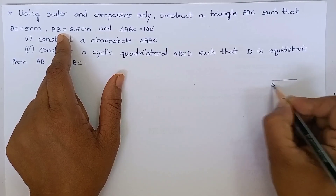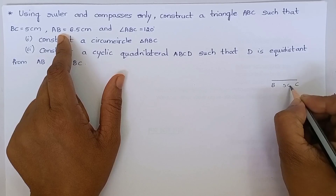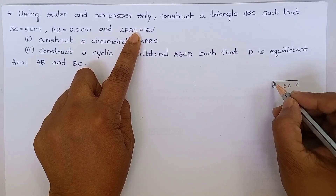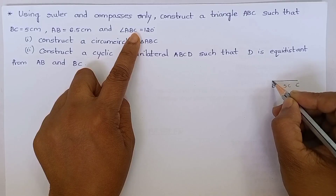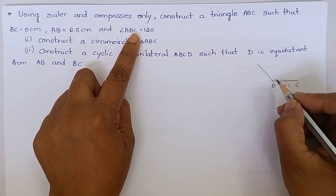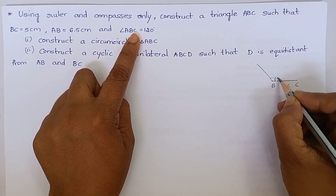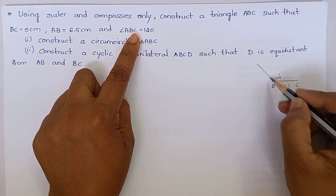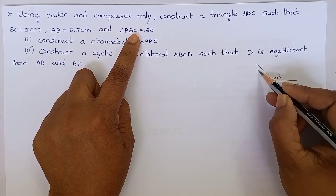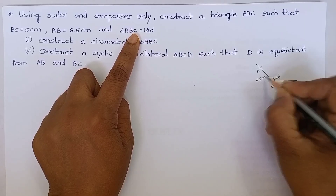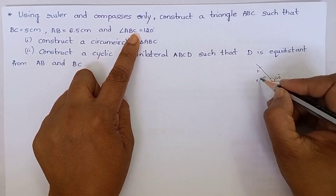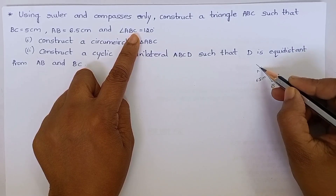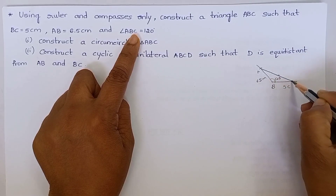BC is 5 cm and angle ABC — angle B is 120 degrees. Then AB is 6.5 cm. With this measurement, we have to construct a triangle.